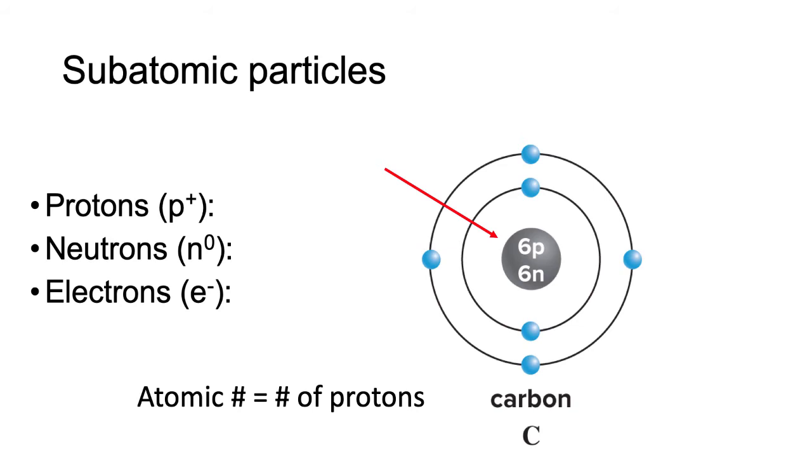Remember, protons are positively charged. And if this atom is electrically neutral, it needs to have the same number of negative charges. In a neutral atom, you have equal numbers of protons and electrons. We already know that we have 6 protons, so we must have 6 electrons also.